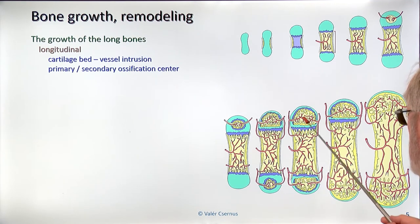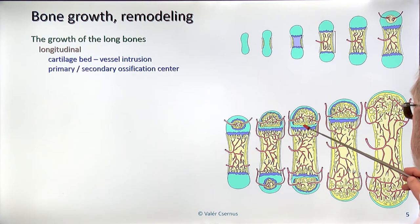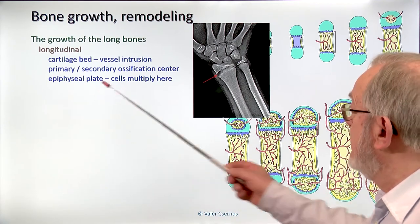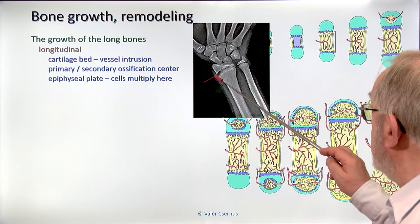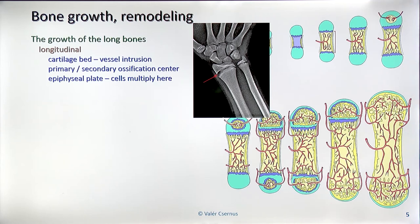If you take an x-ray picture of a child's hand, you can see the radius and the ulna, and on their distal ends both have an x-ray-transparent area — this is cartilage, this is the epiphyseal plate, where the cells multiply. As long as we have multiplying cells in this area, the bone can grow because we get a bigger and bigger mass. At the moment when the cells reduce their multiplication and the bony transformation overtakes them, the growth of the bone stops and the bone cannot grow anymore.